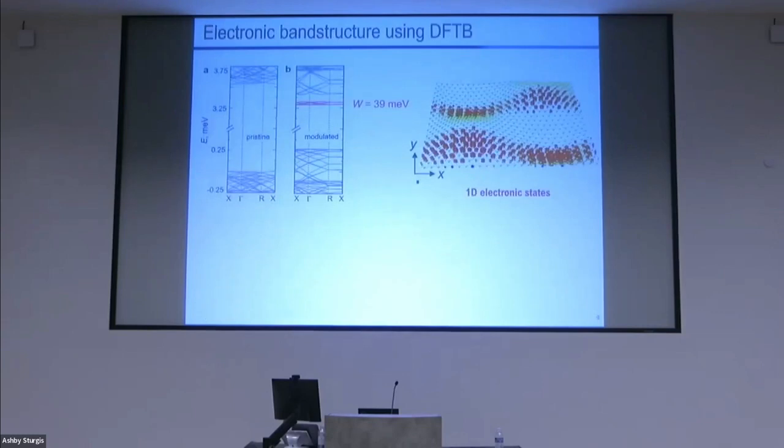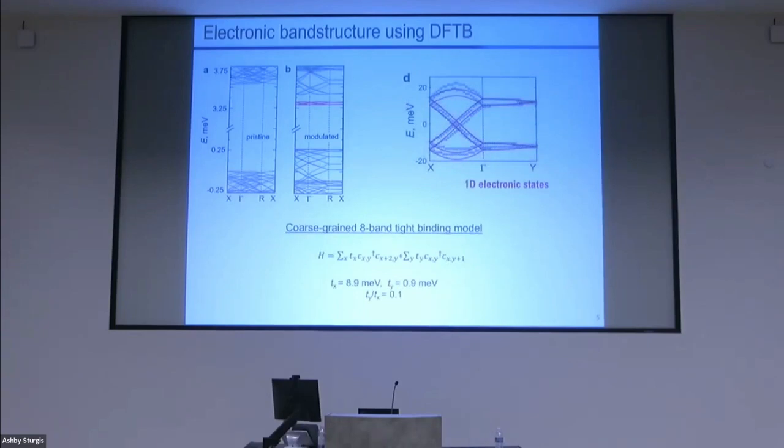To see that indeed that's the case, I calculated the electronic structure using DFT tight-binding. This is the band structure of pristine boron nitride where you see this band gap which is expected. In the case of modulated boron nitride, we see these additional states appearing in the band gap. For example, this particular state here shown in red color has a bandwidth of 39 meV. When I plot the eigenstates of this particular band, you find that these are just localized along the x direction, so these are just 1D states.